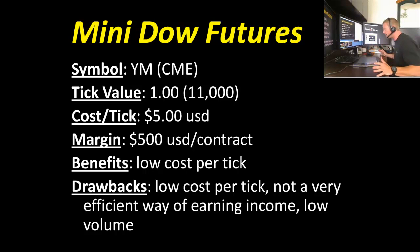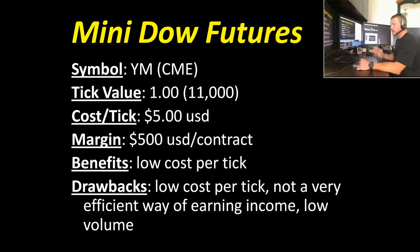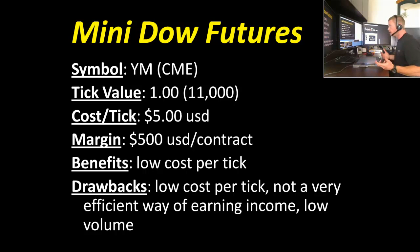The Dow is one of the most popular markets. It's a member of the e-mini family. The symbol is the YM, and this trades both electronically and in the open outcry pit on the CME floor. The tick value is one dollar per tick, so you'll typically see price levels like 11,000, 11,000.50, 11,000.503. The cost per tick is only five dollars per tick.